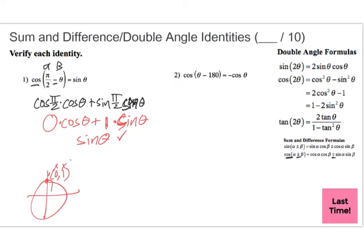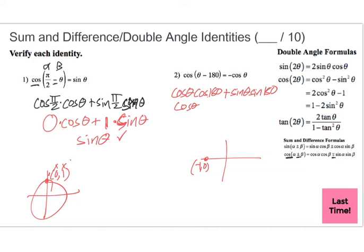For the second one we've got the same type of thing, using cosine subtraction with the same formula: cosine(θ)·cosine(180) plus sine(θ)·sine(180). Over here we're at the point (−1, 0). So cosine(180) is −1 and sine(180) is 0. That part goes away, leaving us with negative cosine(θ).